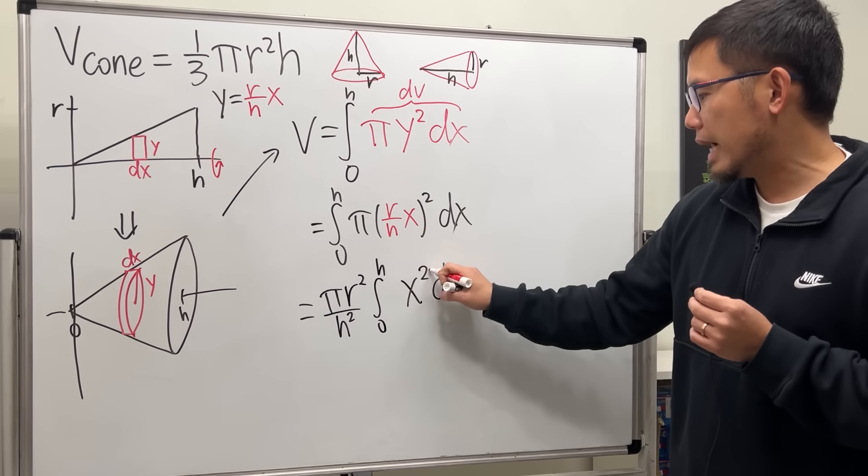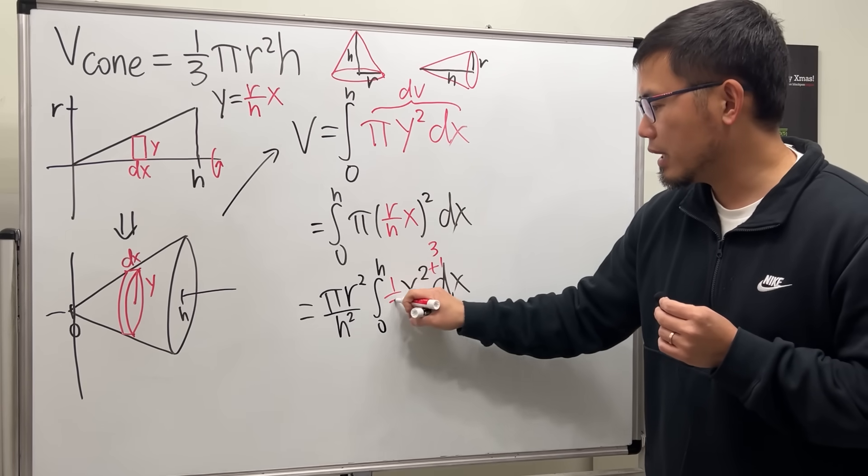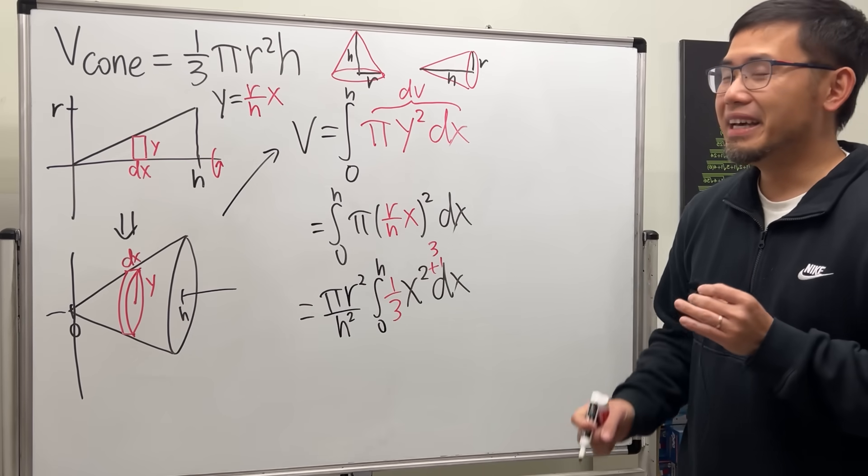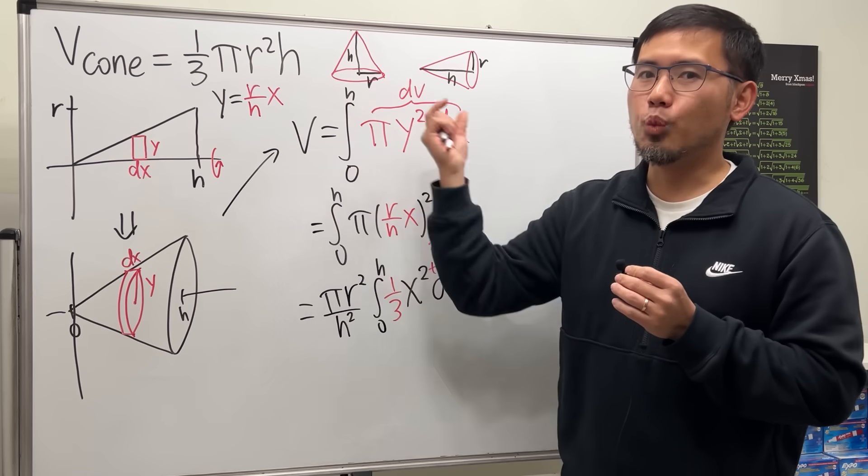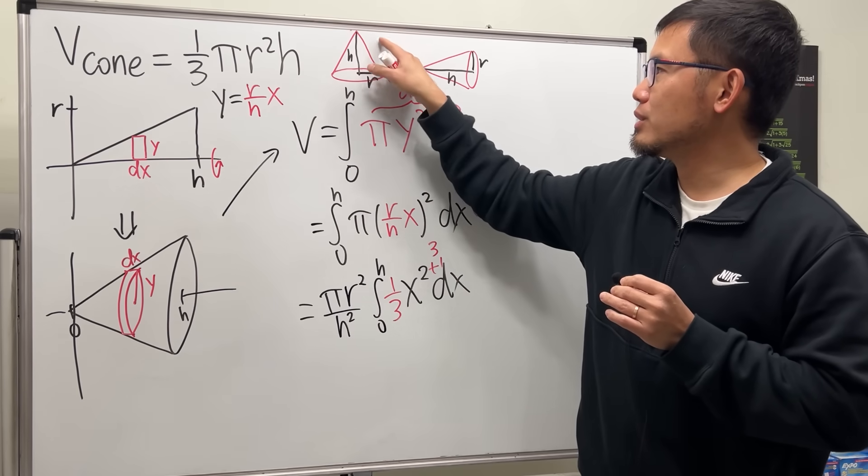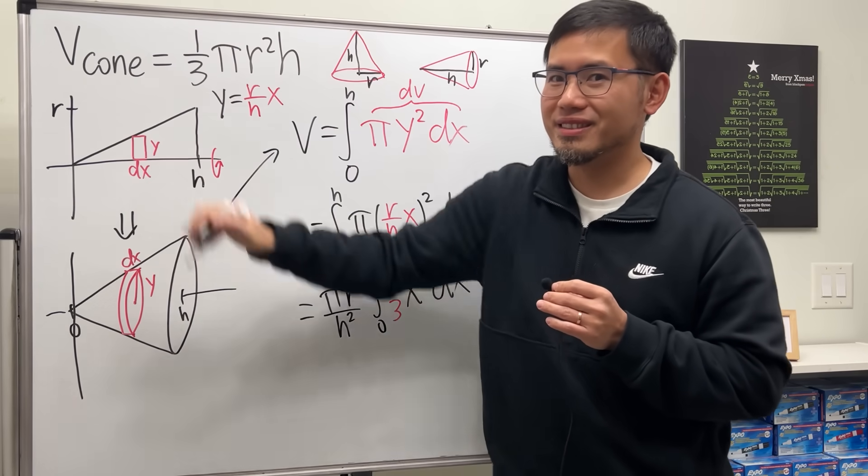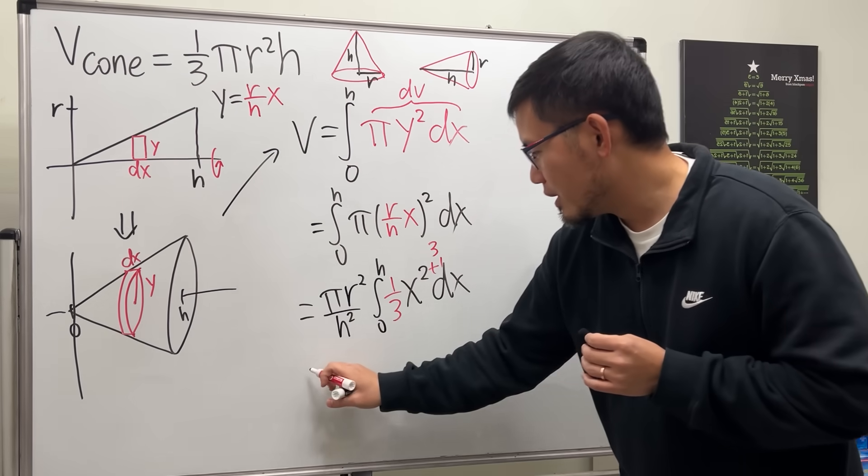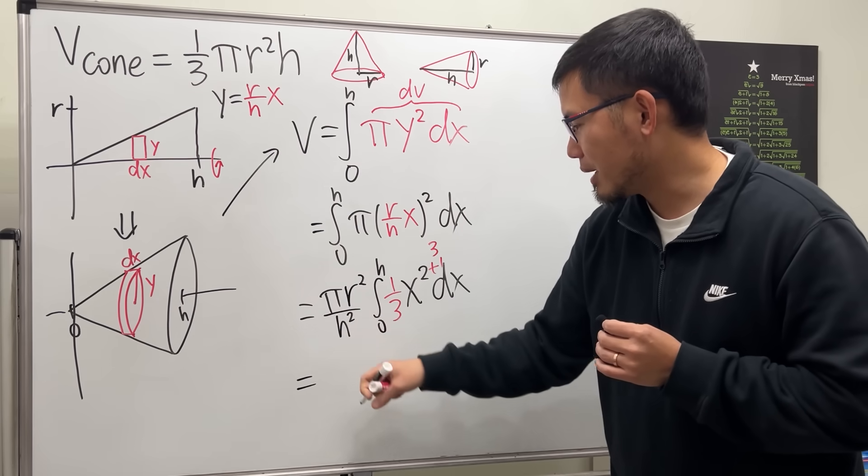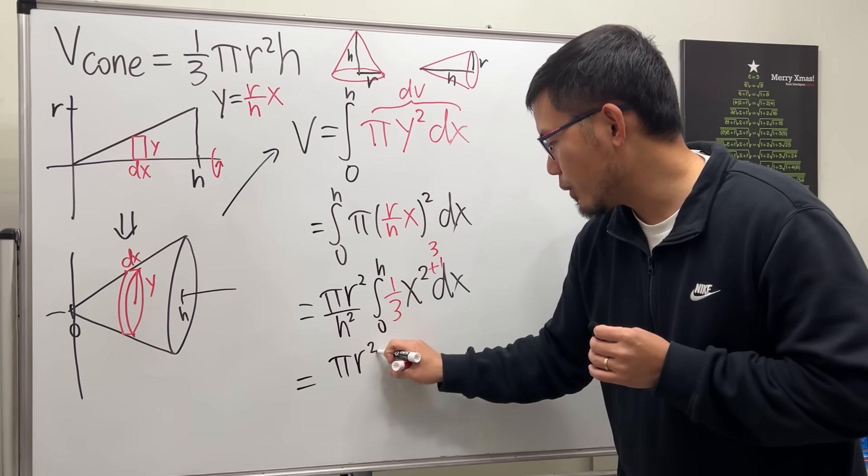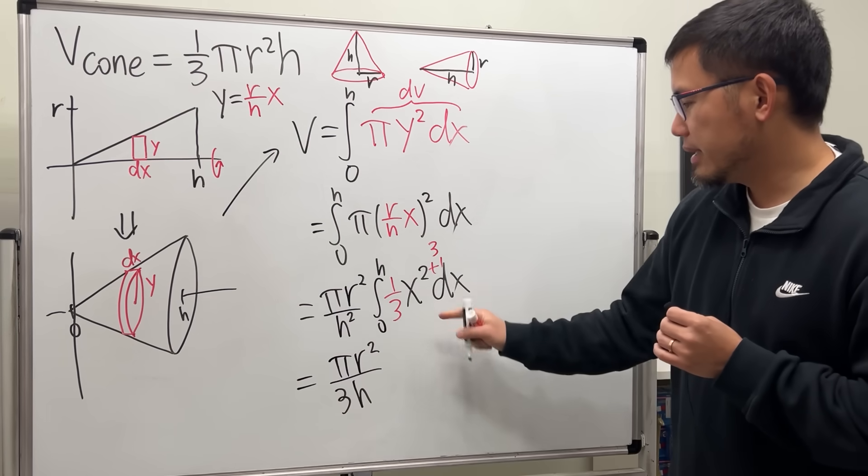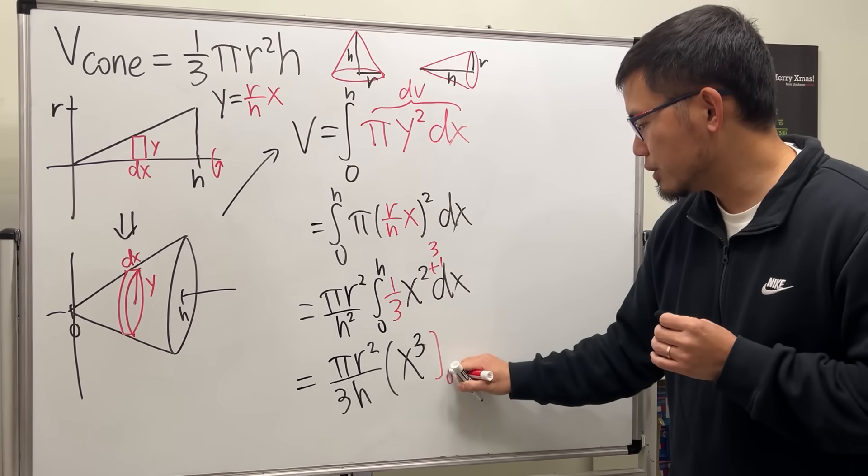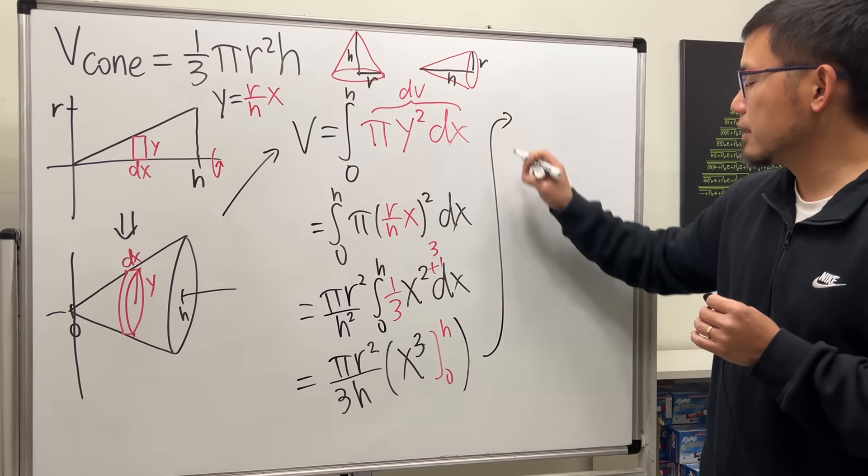Now integrate this. Add one to the power, we get 3 and divide it by the new power. Ah, this is how we end up with the one third. In fact, a cone is like one third of a cylinder. It's really just one third of a cylinder. Because that's the formula for the cylinder. By the way though, for the integration, let's just finish it. The 3 can also be going to the front on the bottom. So we have pi r squared over 3h. And then inside here, we just have x cubed. So x to the third power. And then we have to go from 0 to h.